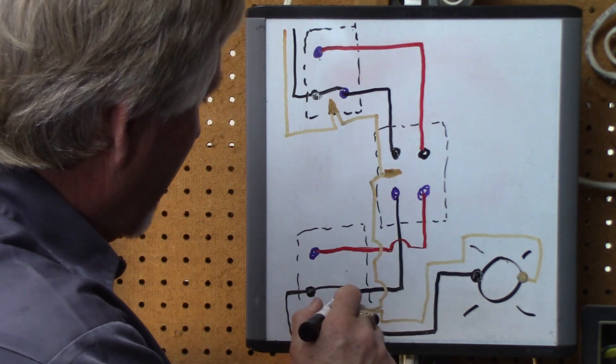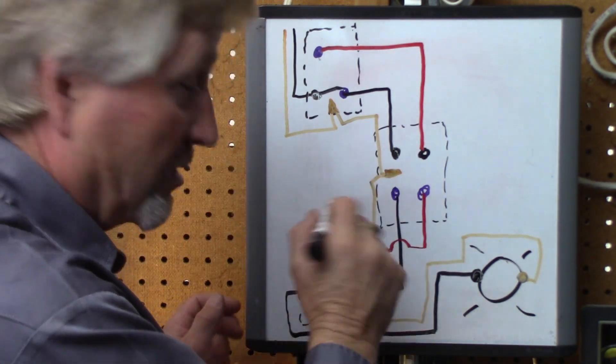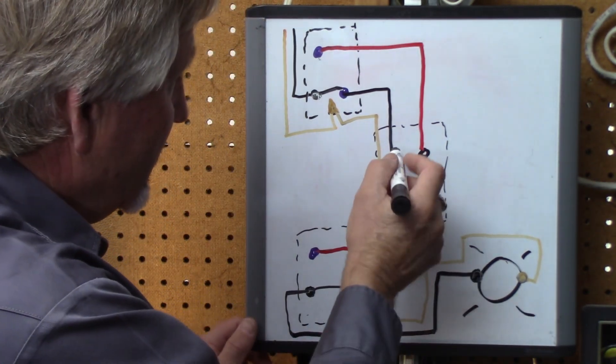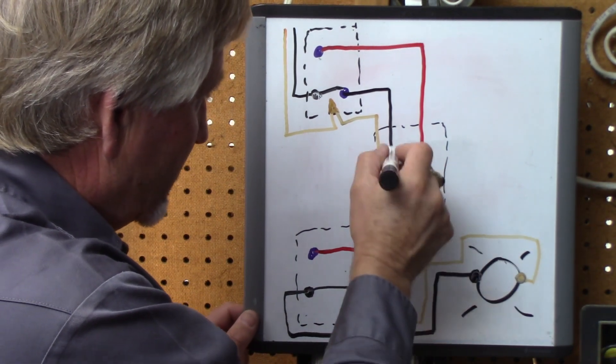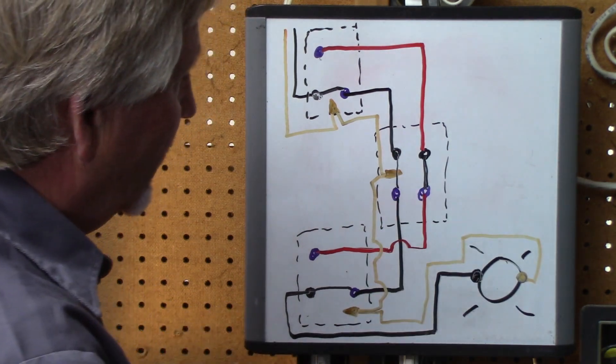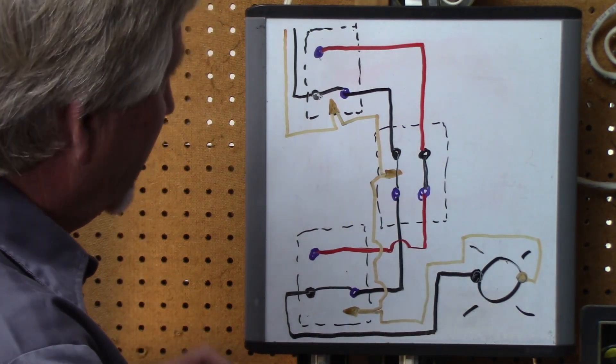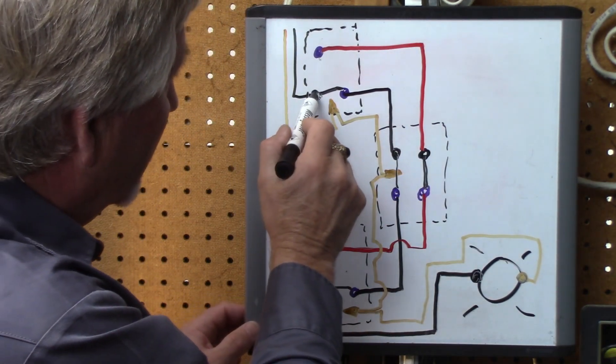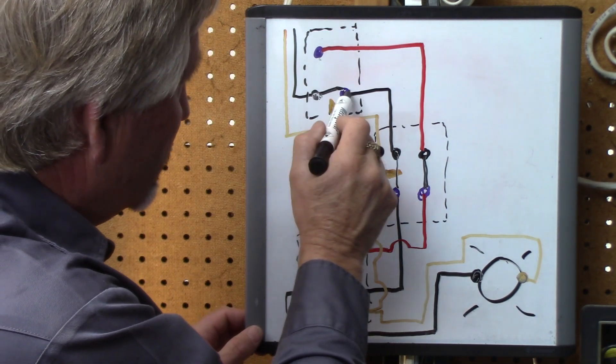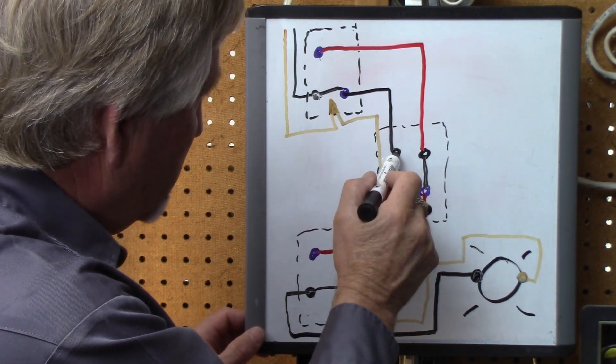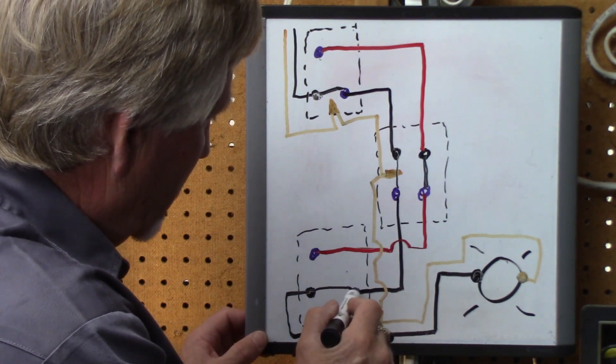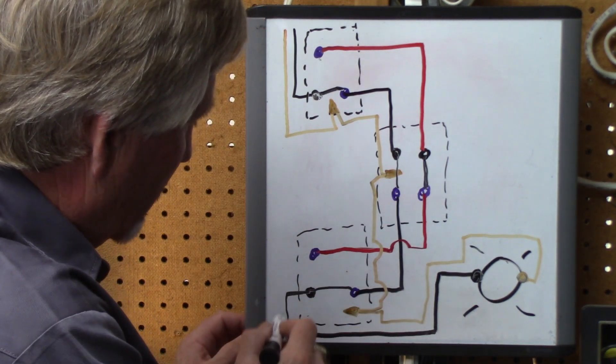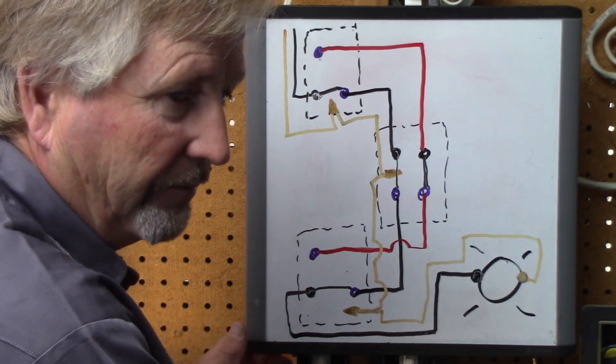But let's see what happens in the 4-way switch. So what it does is it is either going to be in one position. It connects these two sets of terminals together, okay? So let's follow it through again. Power coming in. First 3-way. Common. Switches down. Comes down on this black traveler wire. Goes through the 4-way switch. On to the 3-way switch. That switch is in the down position. And your light is on, okay?